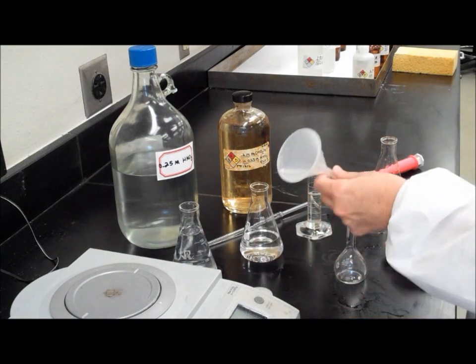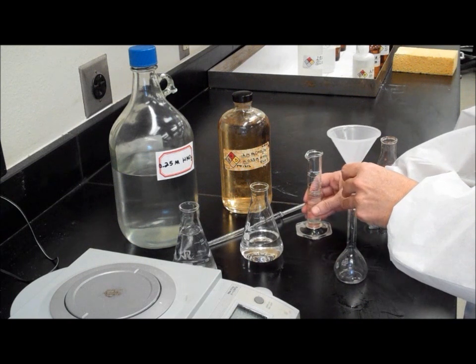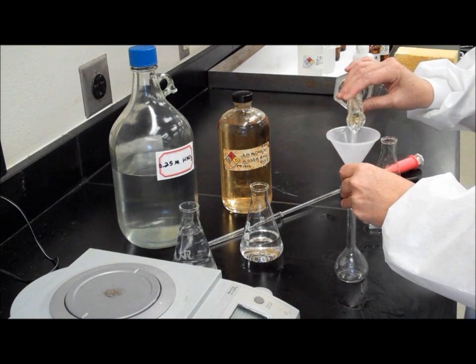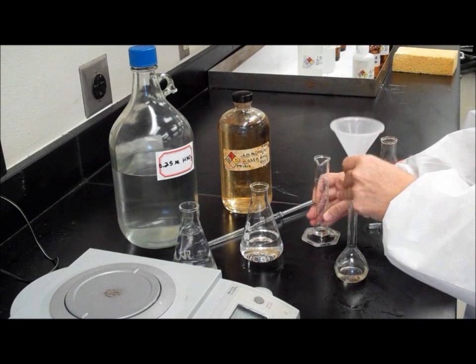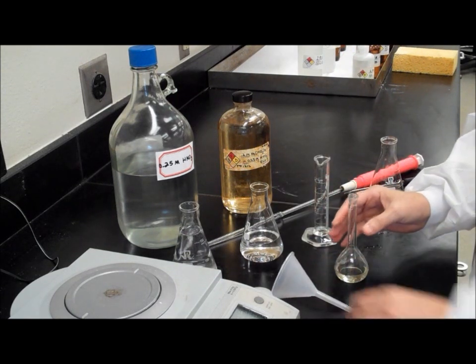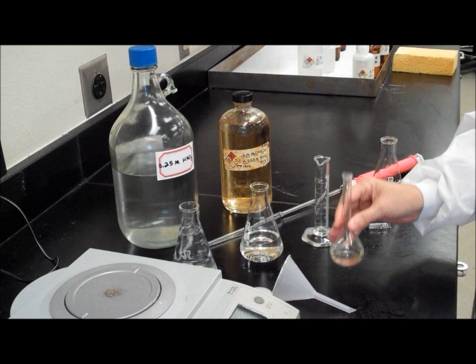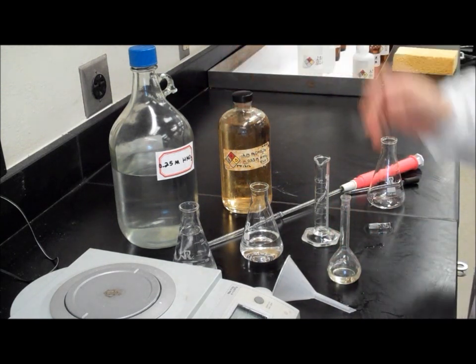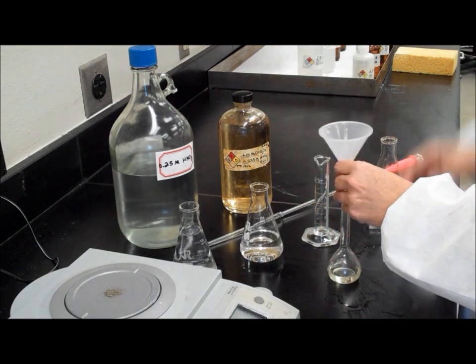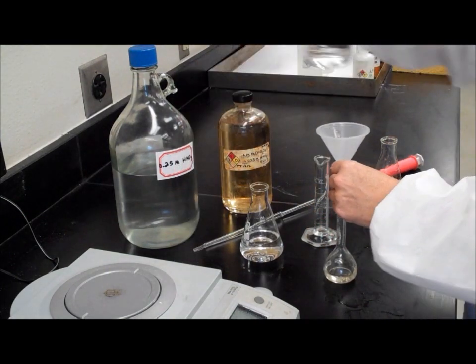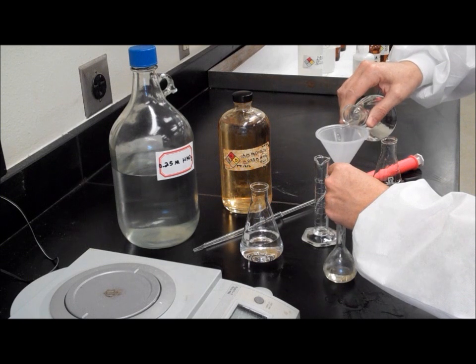Using a funnel, add your iron nitrate to your volumetric flask. You will then need to dilute the solution to 50 milliliters using 0.25 molar nitric acid. Using the funnel, fill the body of your volumetric flask with your nitric acid.